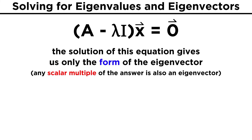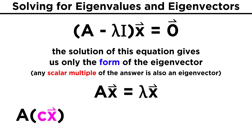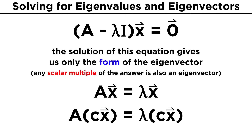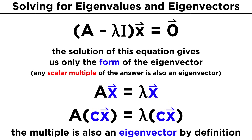Any scalar multiple of the vector we find through this method will also be an eigenvector. We can easily demonstrate this: assume vector X is an eigenvector of A, so AX equals lambda X. Now if we consider the vector CX where C is a scalar, then A times CX can also be written as C times AX. We already know AX equals lambda X, so this becomes C lambda X, which can be rewritten as lambda CX. So we get A(CX) equals lambda(CX), which makes CX an eigenvector by definition.